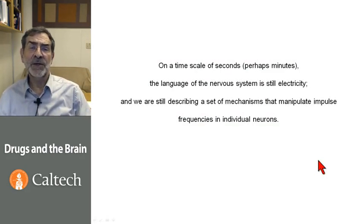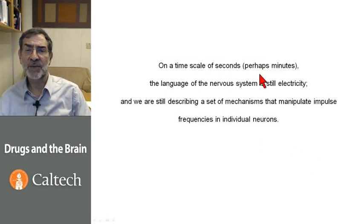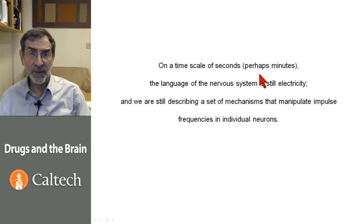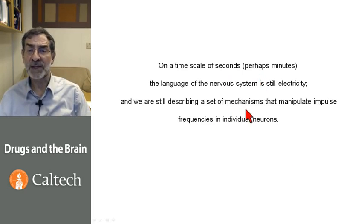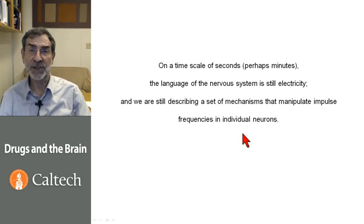On a timescale of seconds and perhaps minutes, the language of the nervous system is still electricity. We are still describing a set of mechanisms that manipulate impulse frequencies in individual neurons, but it's done entirely differently by GPCRs.